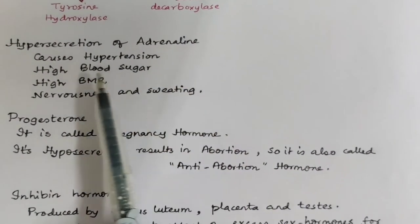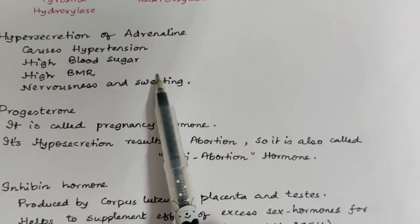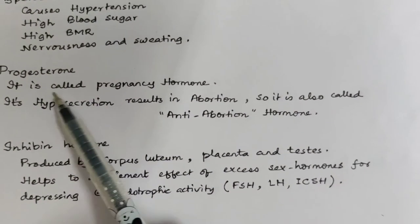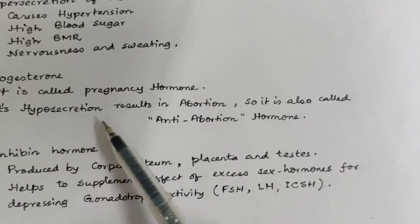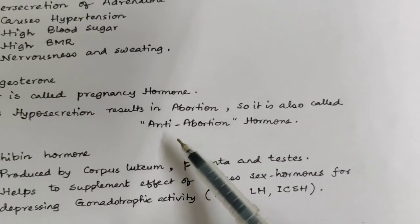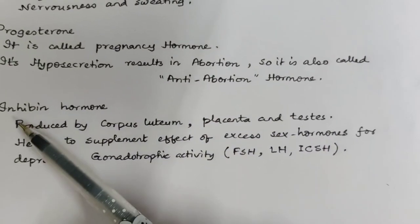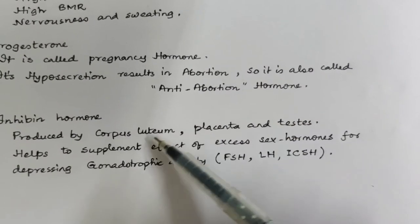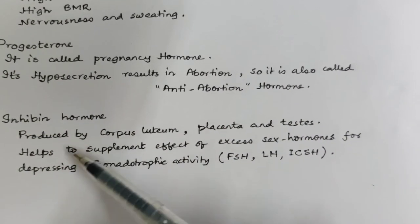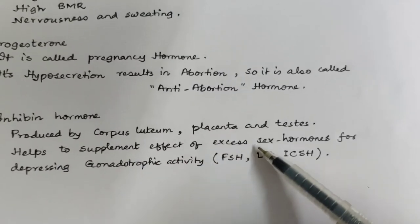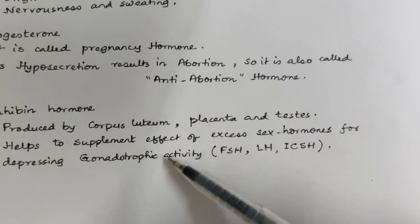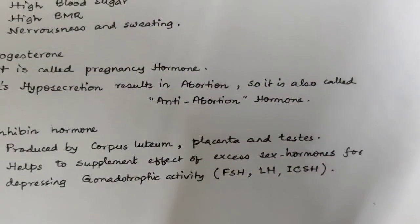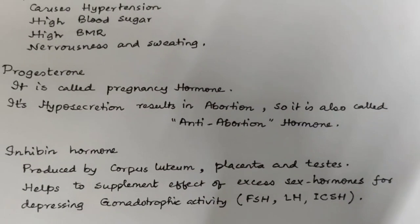Hypersecretion of adrenaline causes hypertension, high blood sugar, high BMR, nervousness, and sweating. Progesterone is called the pregnancy hormone; its hyposecretion results in abortion, so it is also called the anti-abortion hormone or inhibin hormone. It is produced by the corpus luteum, placenta, and testes. It helps to supplement the effect of excess sex hormones by depressing gonadotrophic activity like FSH, LH, and ICSH.